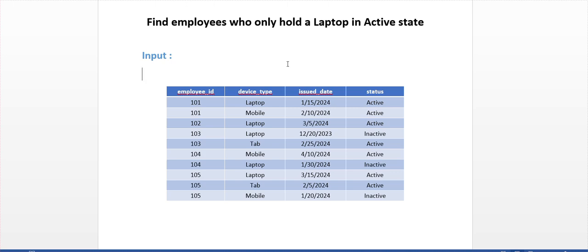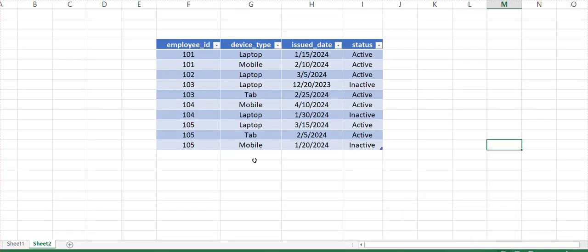So this data is for the IT department where we have the employee ID, device type, issue date, and status. The business is interested to see which employees only hold a laptop as a single device — no mobile or tablet — and where the status should be active.